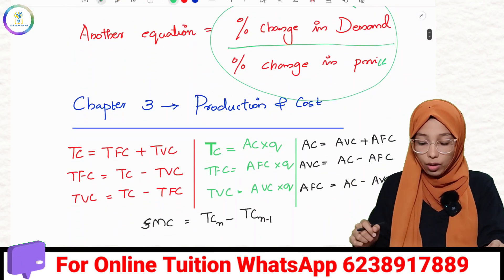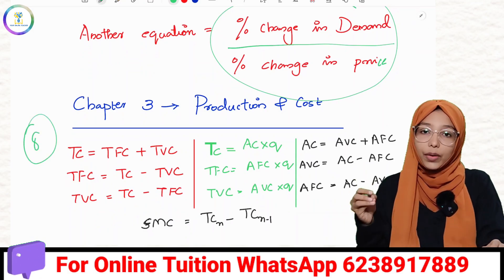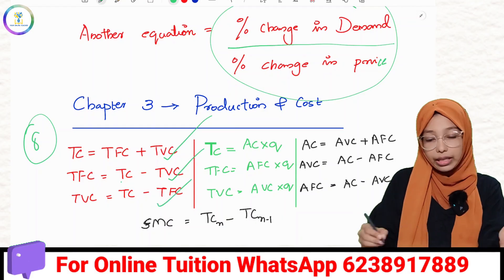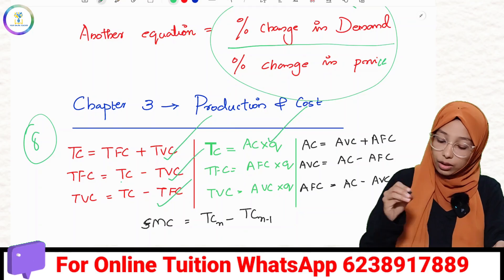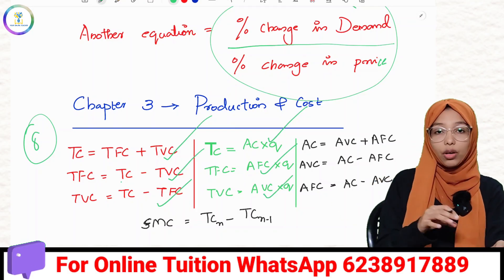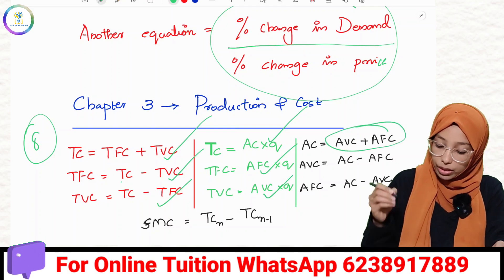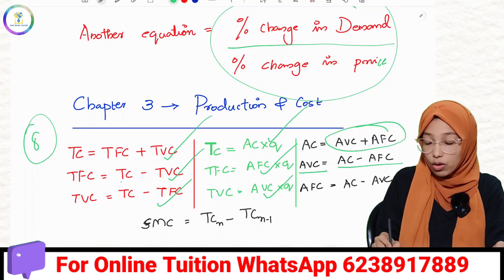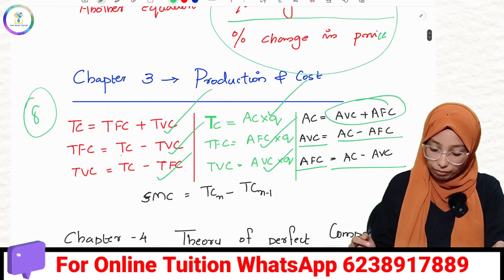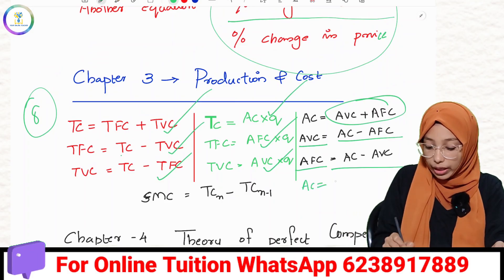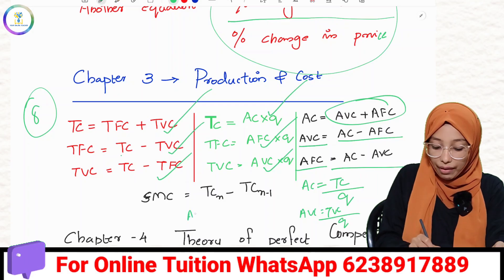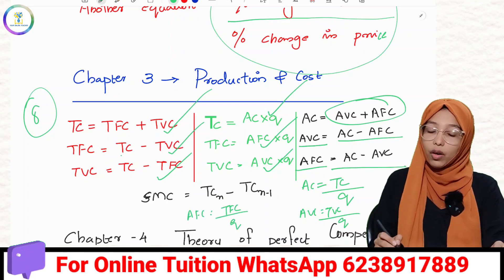In Chapter 3 on Production, TC equals TFC plus TVC. Average Cost is Total Cost divided by Quantity, Average Fixed Cost is Total Fixed Cost divided by Quantity, and Average Variable Cost is Total Variable Cost divided by Quantity. Average Cost equals Average Fixed Cost plus Average Variable Cost. MC is the Marginal Cost, calculated as TCn minus TCn-1.